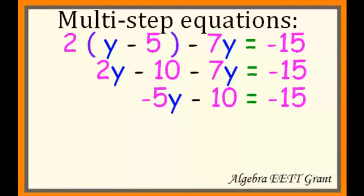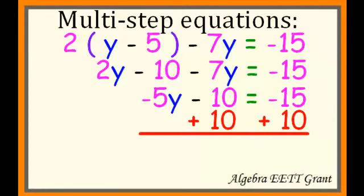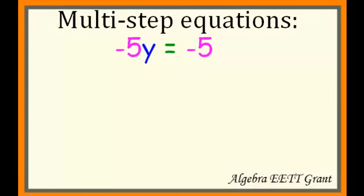Now this looks like a two-step equation. To get the negative 10 to the other side, which is what we always have to deal with first, any number added or subtracted with our variable, we're going to add 10 to both sides. On the left side, the 10s cancel off. So we get negative 5y equals negative 15 plus 10, which is negative 5. Now how do we deal with negative 5y equals negative 5? Well, it's multiplied by negative 5, so to divide...